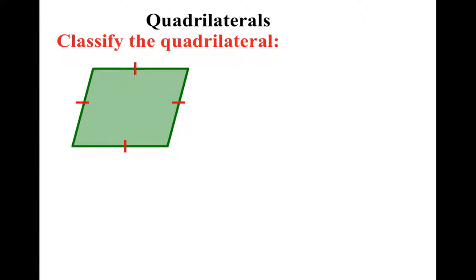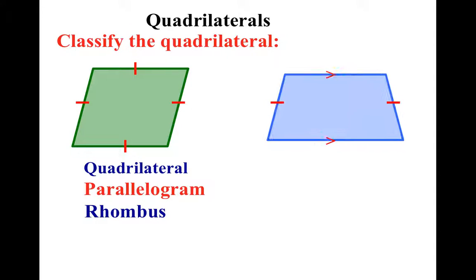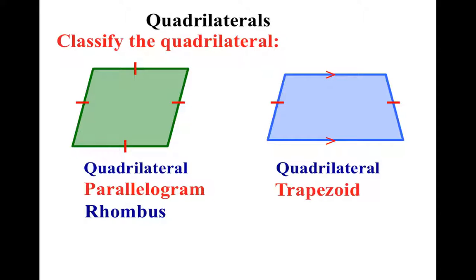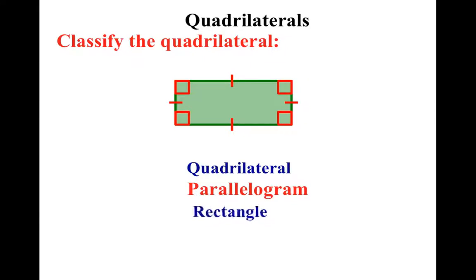Now we have to classify. If I put these little tick marks here, it means all these sides are the same length. So it's a parallelogram — all sides are parallel and all sides are equal — but I don't have all 90-degree angles. So it's a quadrilateral, it's a parallelogram, and it's a rhombus. And just so you know, these little arrow marks show that lines are parallel to each other. So this one is a quadrilateral — what kind? It has one set of parallel sides, so it's a trapezoid. You try this one — it's a quadrilateral, it's a parallelogram, and what kind of parallelogram? It's a rectangle.